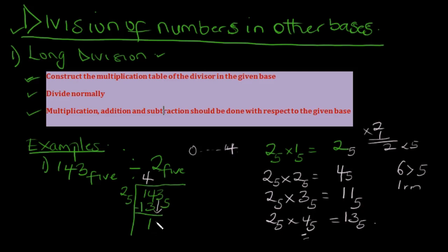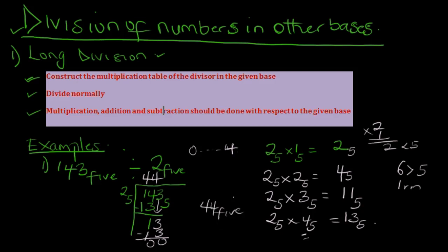Now, how many times can 2 base 5 go into 13? Looking at the table, it's a perfect division — 2 base 5 multiplied by 4 is 13. So we write 4 again. 2 multiplied by 4 is 13; subtract: 3 minus 3 is 0, remainder 0. So our answer is 44 in base 5.